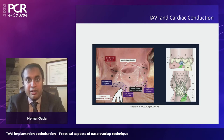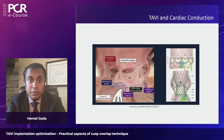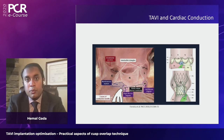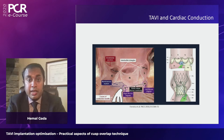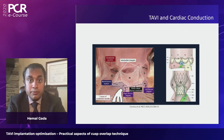The critical landmark is the non-right commissure. Just below it lies the membranous septum, where the conduction system is sheathed. Beneath that is the muscular septum, where it becomes more superficial. Landing a valve too deep relative to the non-right commissure incurs higher conduction disturbance rates. We want a view that optimizes visualization of the non-right commissure and the true insertion of the non-coronary cusp.